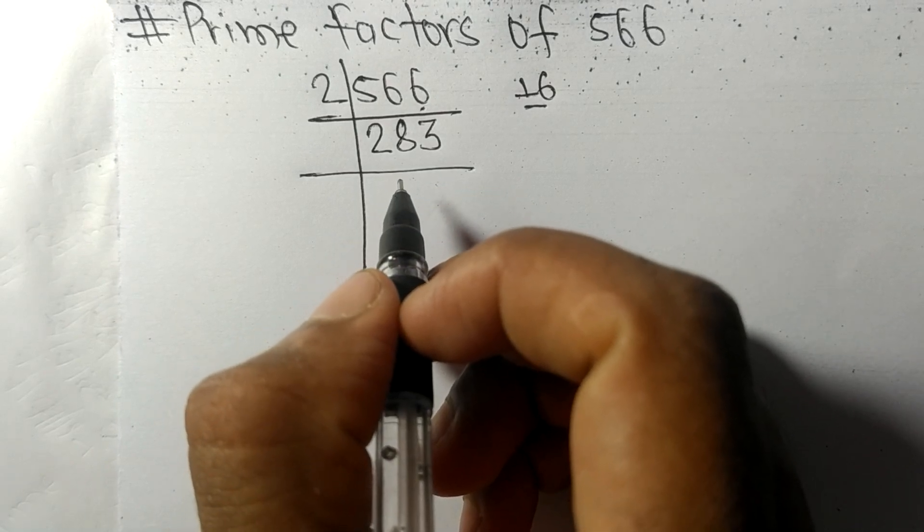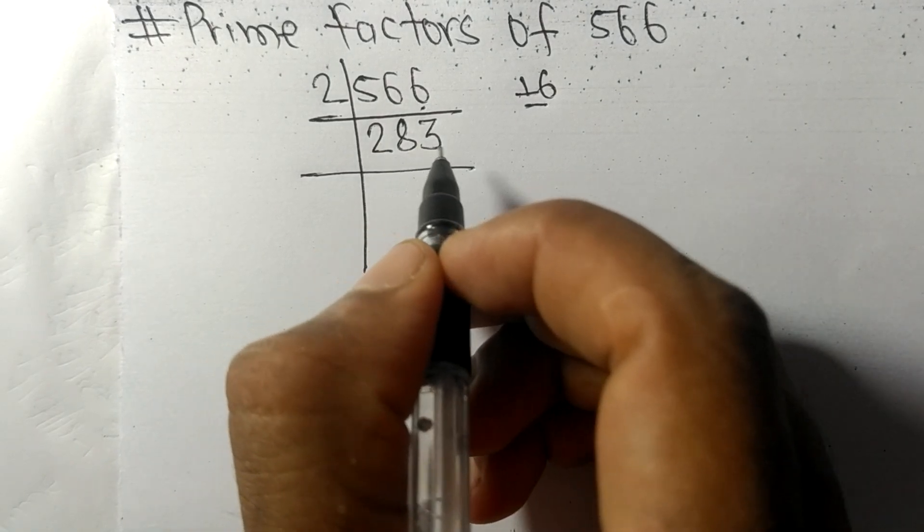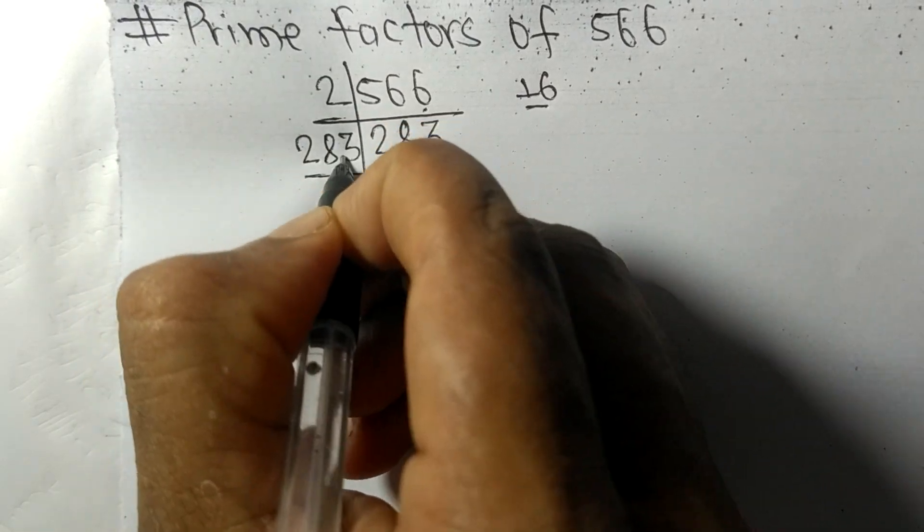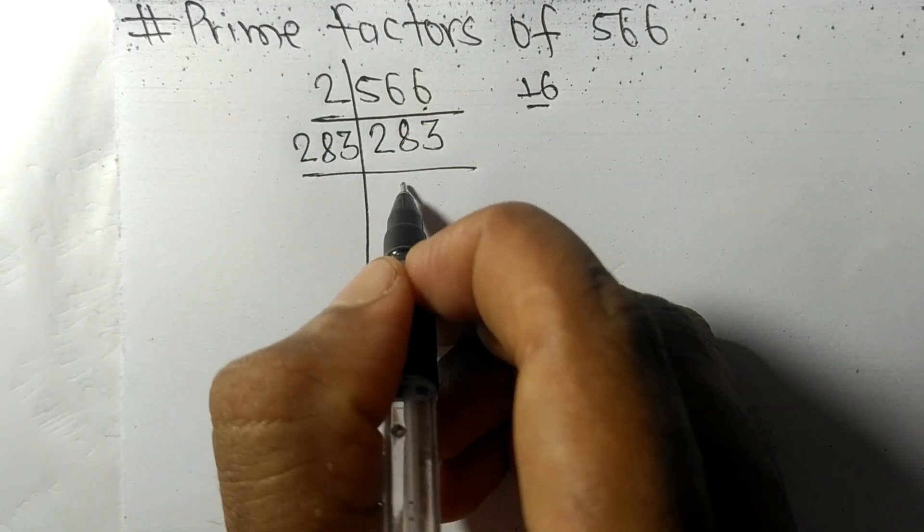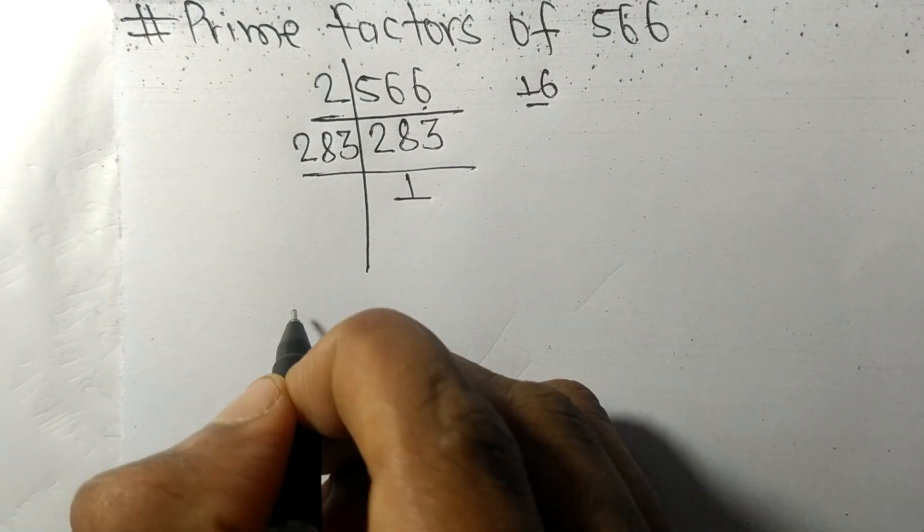Which is a prime number, so it is divisible by 283 itself and we get here 1. Therefore,